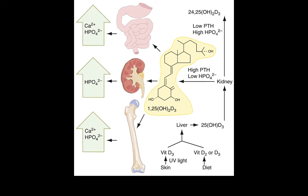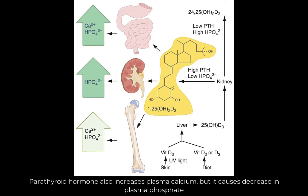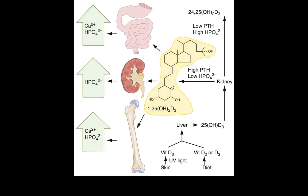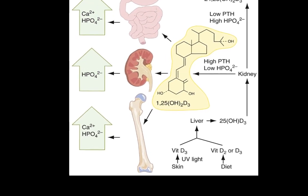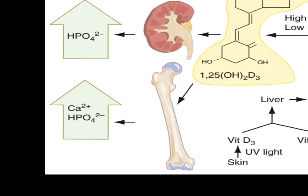The vitamin enhances phosphate and calcium absorption from the intestine, and phosphate and calcium reabsorption from renal tubules. Thus the vitamin tends to normalize low calcium and phosphate plasma concentration. In short, vitamin D increases calcium and phosphate plasma concentration by enhancing intestinal absorption and renal reabsorption.